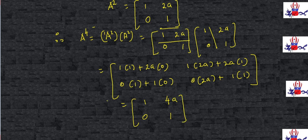So this is going to be A raised to the power 4: [[1, 4a], [0, 1]]. This completes the result. Of course, in future classes you would have a formula by which you would be able to calculate a matrix raised to any power.